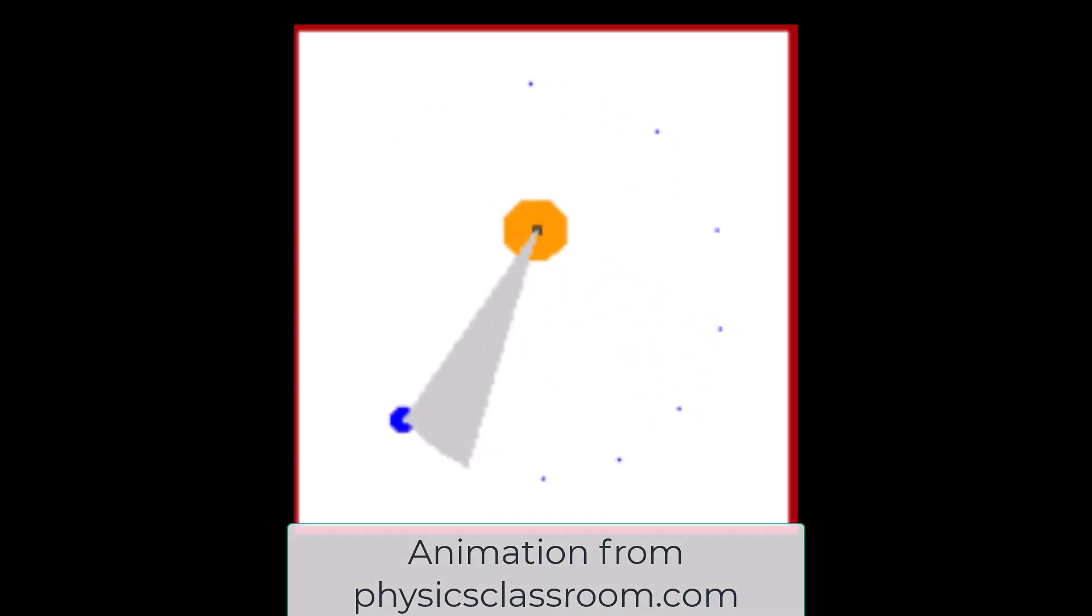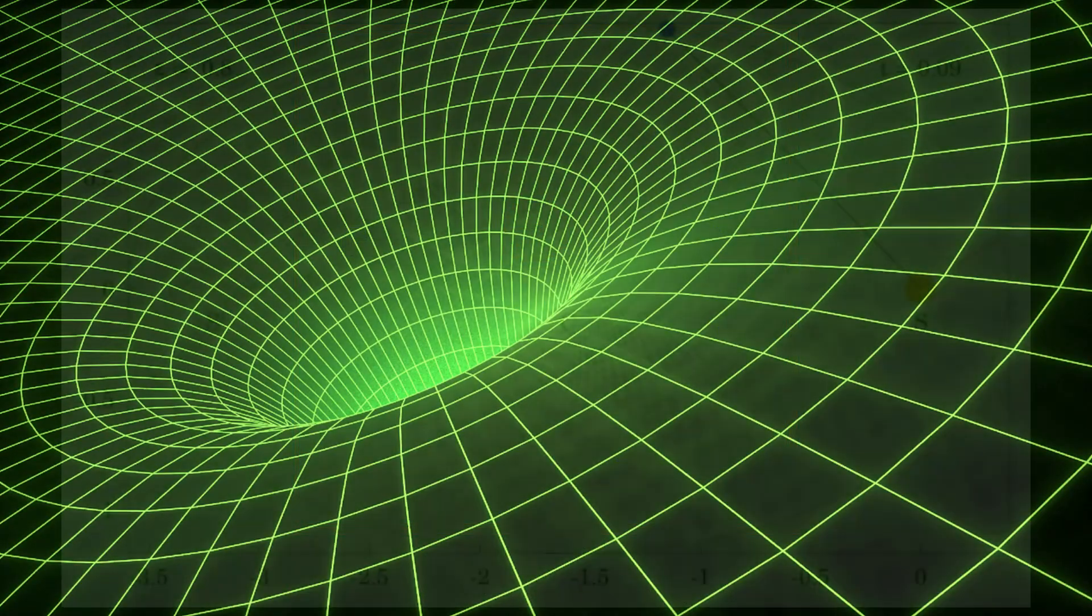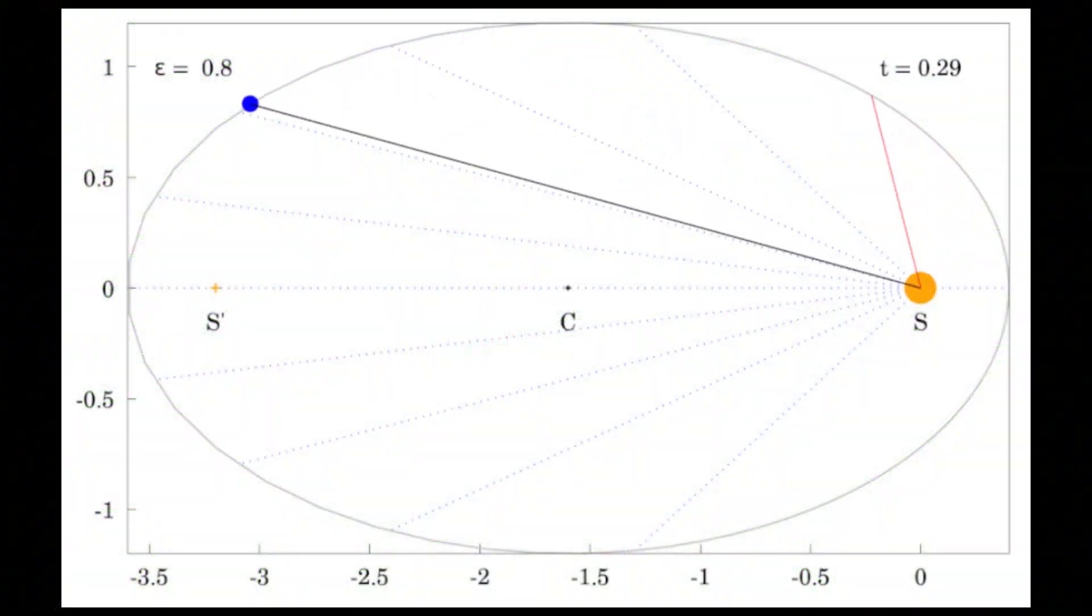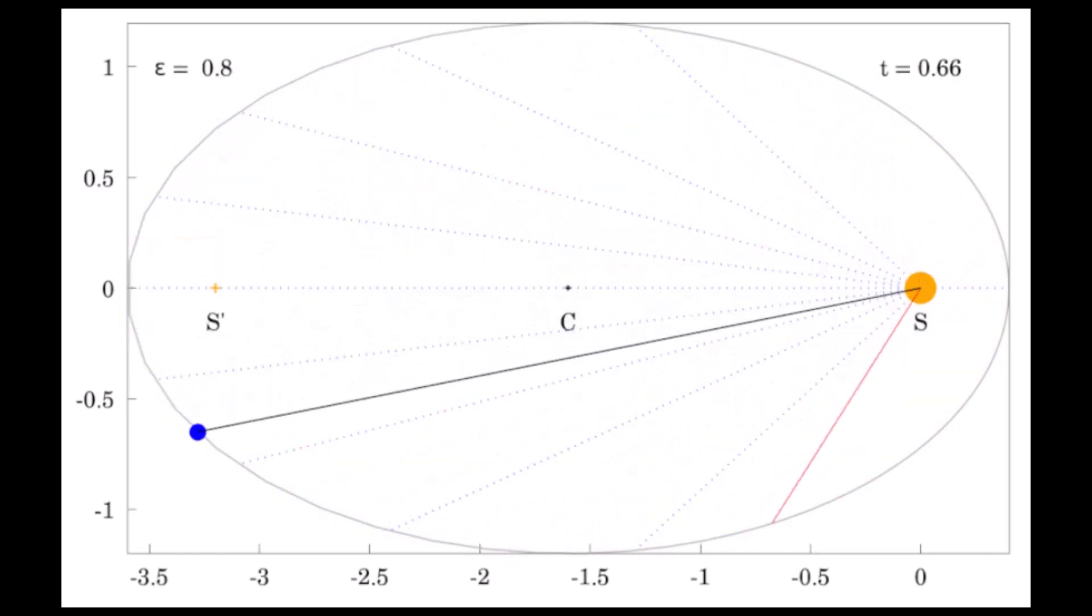This might be a hard idea to come to terms with, but I'd recommend thinking about gravity for a second. I'm sure you're aware that gravity is stronger when you're closer to an object, so when a planet is closer to the sun—because remember its orbit is elliptical, it will be closer at some times than others—but when it's closer to the sun it gets pulled on stronger by gravity, accelerating its orbital speed.